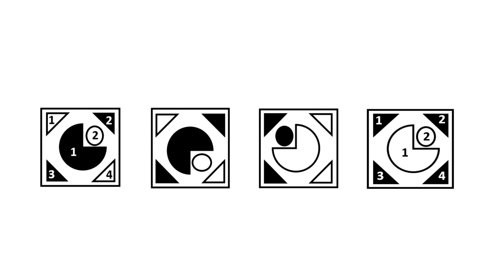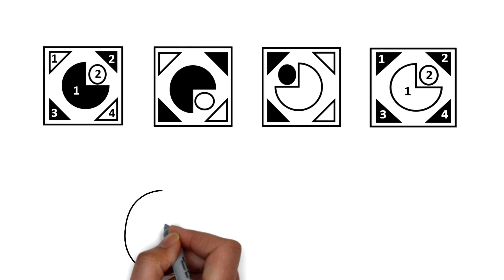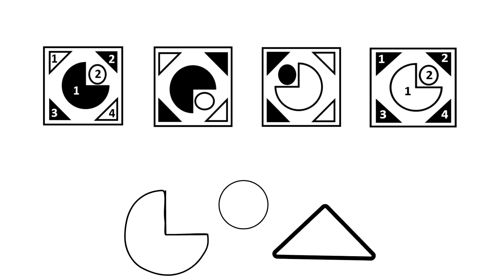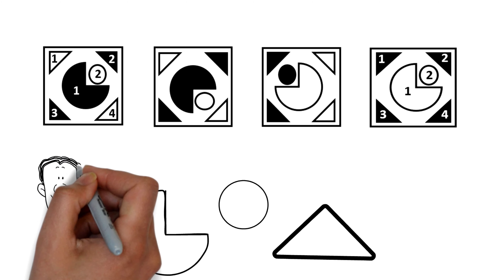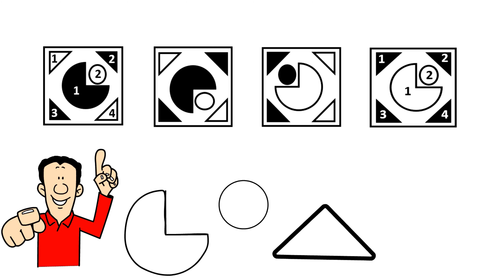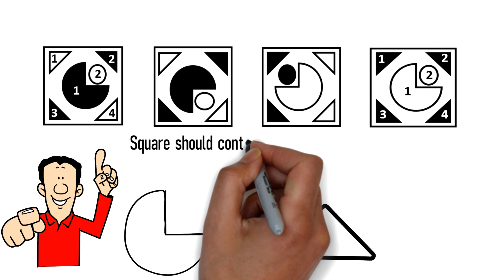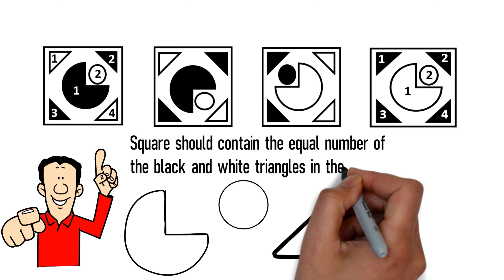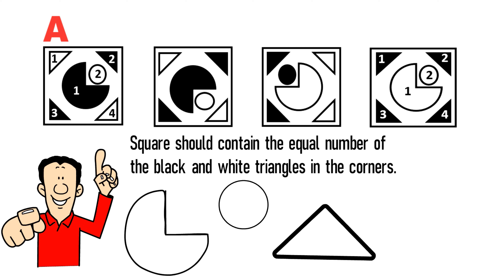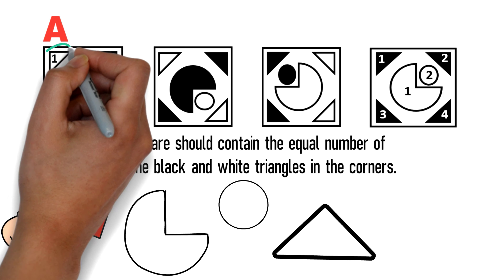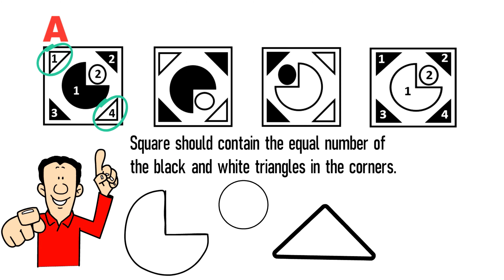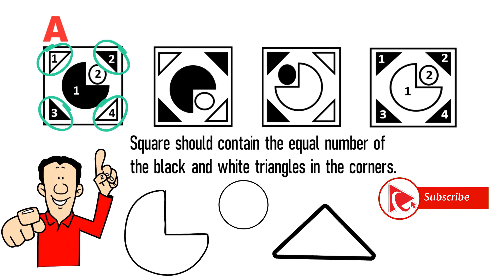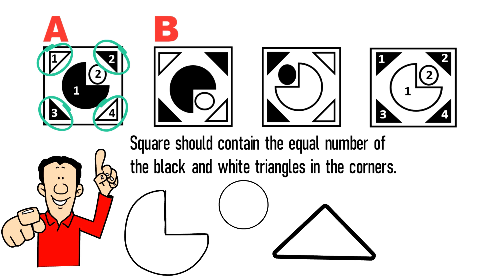The key to solving this challenge is detecting the pattern. Since there are two shapes — triangles and circles — you should try to detect the pattern among each. In this question there is one pattern: the triangles. The pattern is that each square should contain an equal number of black and white triangles in the corners. In shape A, white triangles are in the upper-left and bottom-right corners, and black triangles are in the bottom-left and upper-right corners.